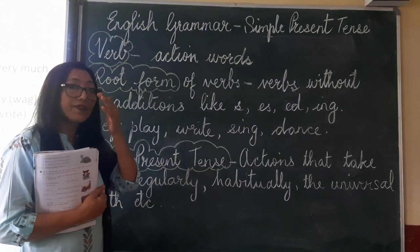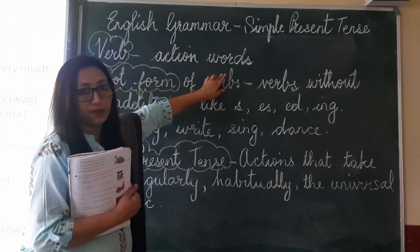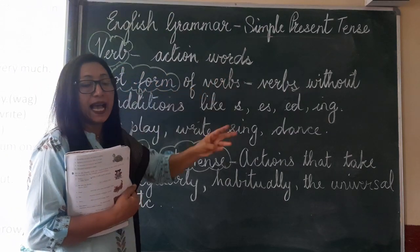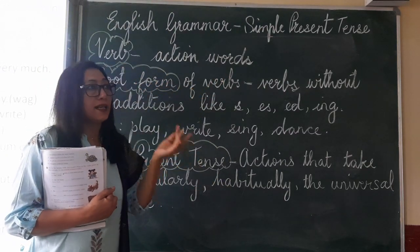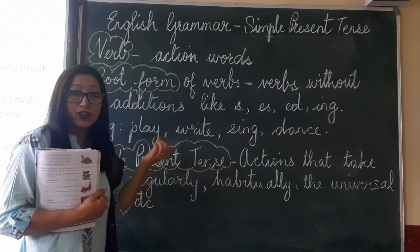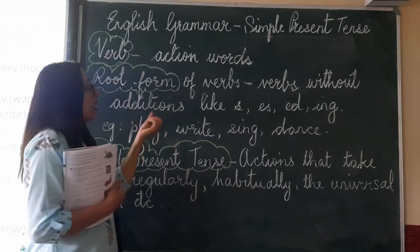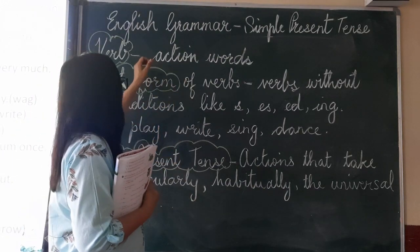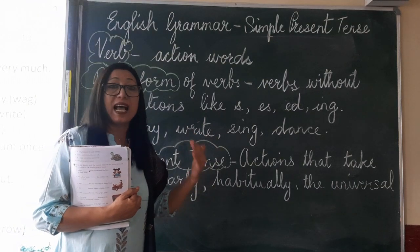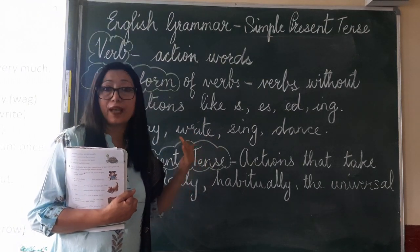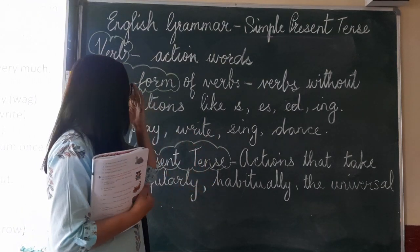What is a verb? A verb is an action word. Stand, sit, cry, play, drink are all verbs. Is, are, am, was, were, has, have, had are also verbs.